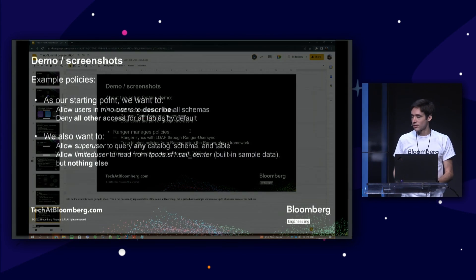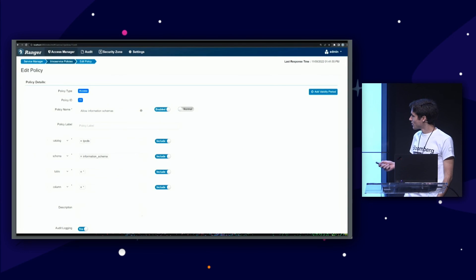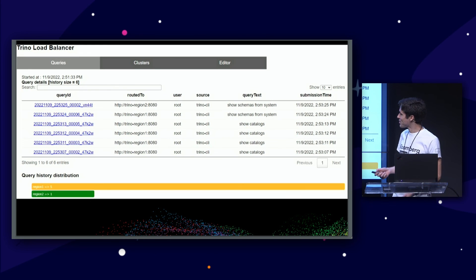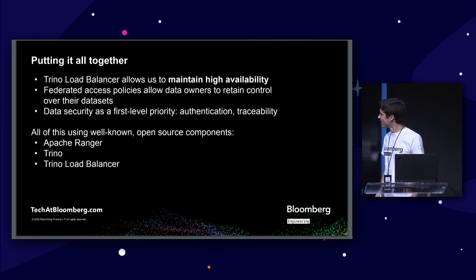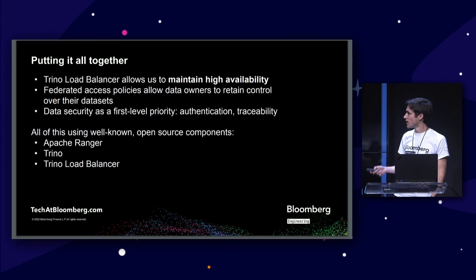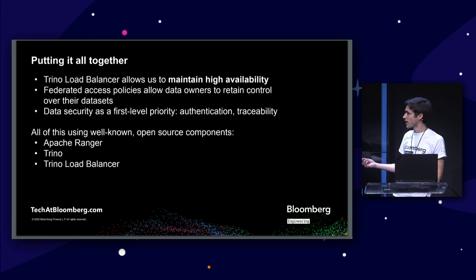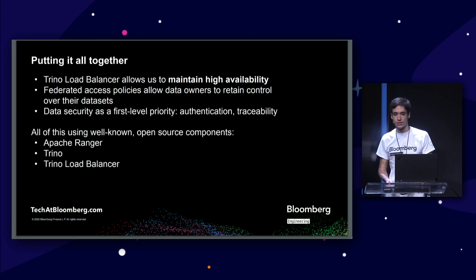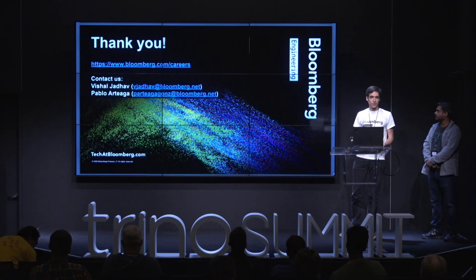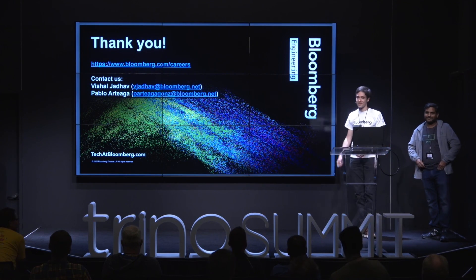Putting it all together: the load balancer allows us to maintain high availability. Federated access allows data owners to retain control of their datasets. And data security is a first-level commitment — authentication and traceability — all using well-known open source components like Ranger, Trino, and a fork of the open source Presto Gateway. Thank you very much. We are also hiring, so if you're interested, please come talk to us or visit the careers website.